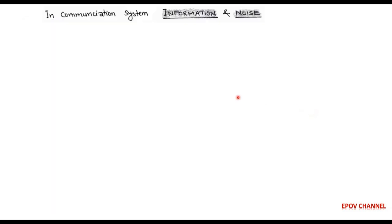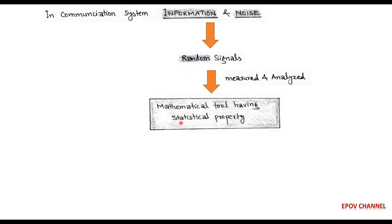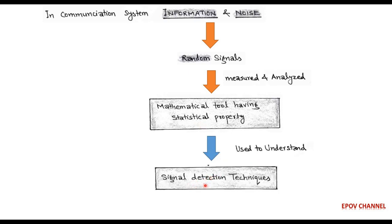In a communication system, when noise is introduced with the information, the combined signal becomes a random signal. In order to analyze and measure these types of random signals, a mathematical tool is used that has statistical and average properties and can be used for signal detection techniques.